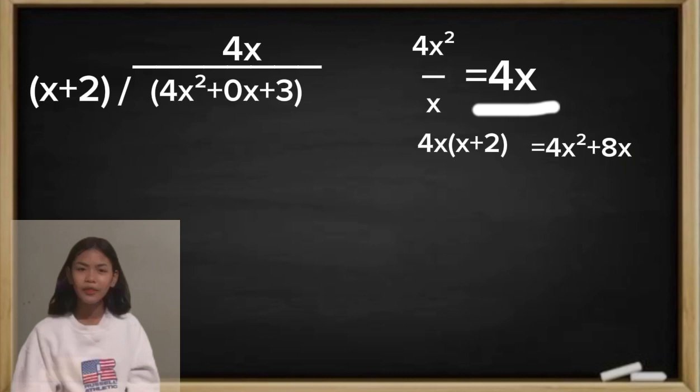Then we will subtract it to our dividend. So that will be negative 8x. Because 4x squared is cancelled out. Because 4x squared minus 4x squared is equal to 0.